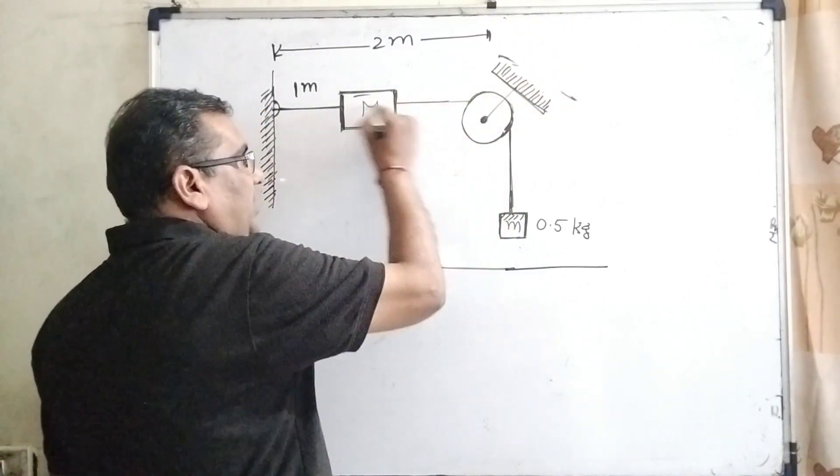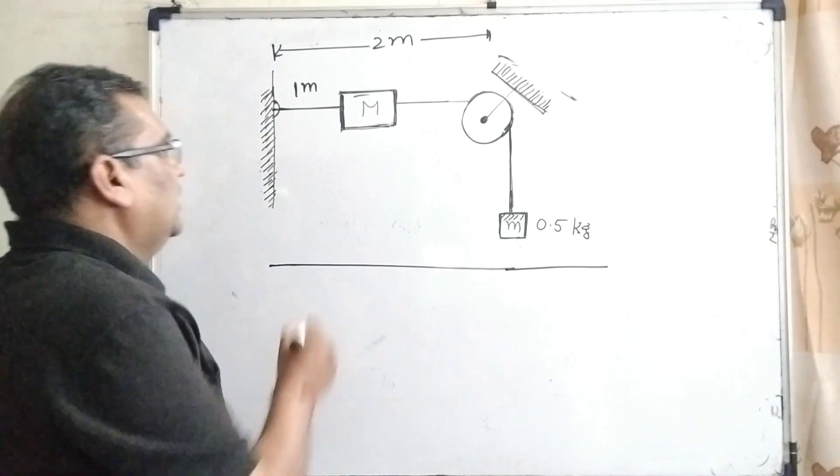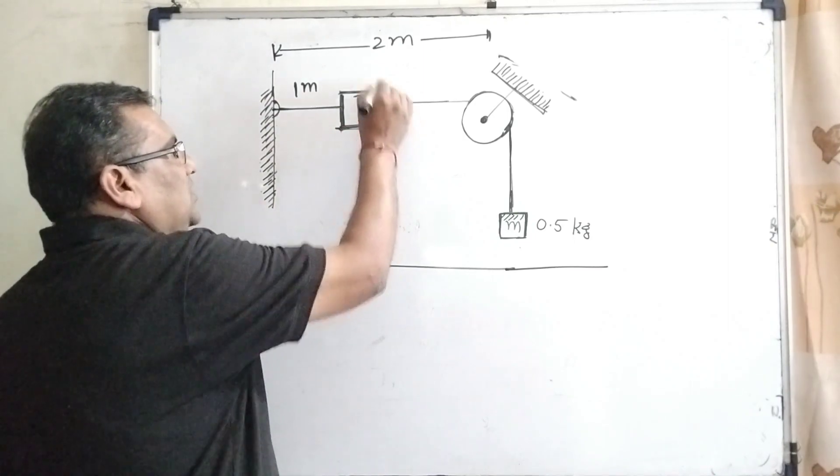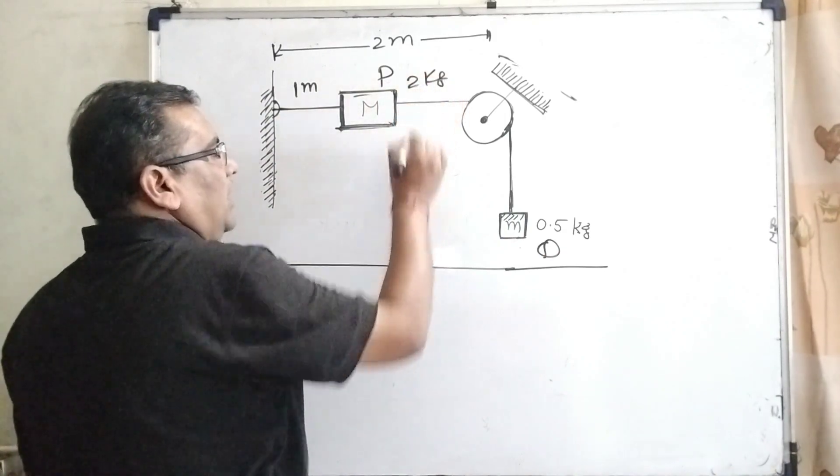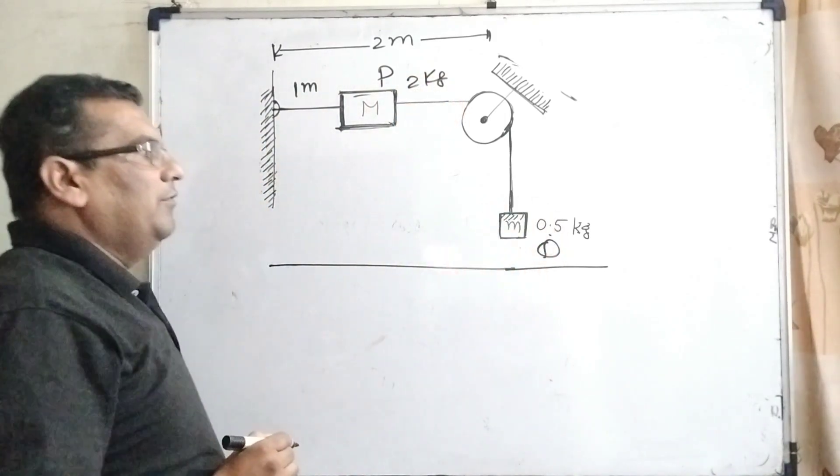This string is connected with a small block. Let's say the names are P and Q. Its mass is 2 kilograms and its mass is 0.5 kilograms.